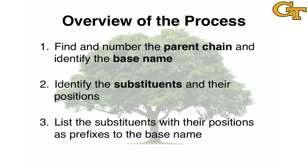Let's begin with a brief overview of the process we developed in the last video to name alkanes. Step one is to find and number the parent chain and identify the base name of this parent chain. In this video, we're going to expand on this step by examining different ways to identify, number, and name the parent chain based on the presence of a key functional group like a hydroxyl group. Step two is to identify the substituents and their positions. In this video, we're going to add to our toolbox of substituents to move beyond alkyl groups and look at other types of functional groups. Step three is to list the substituents with their positions as prefixes to the base name. This step is largely going to remain the same, except for the new names we add to our substituent toolbox.